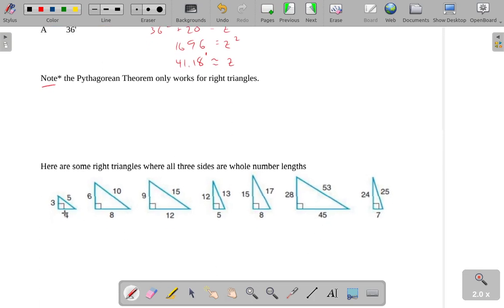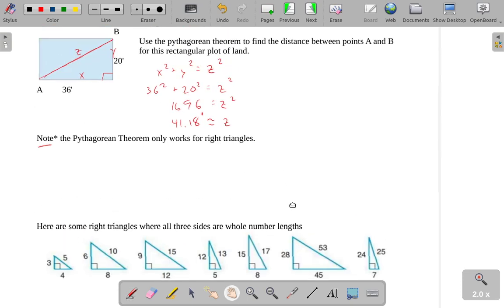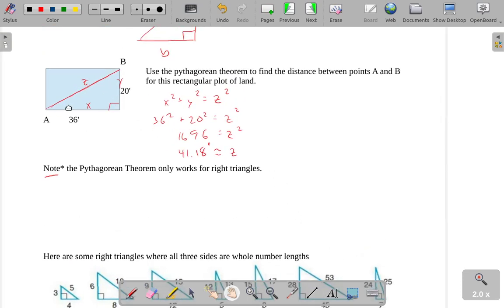All right, so talking about the Pythagorean theorem, there are certain, we call these Pythagorean triples, certain lengths here where they come out as nice numbers. You can see in this example, if we have 20 feet on that side and 36 feet on that side, this did not come out as a very nice number, 41.18, whatever.